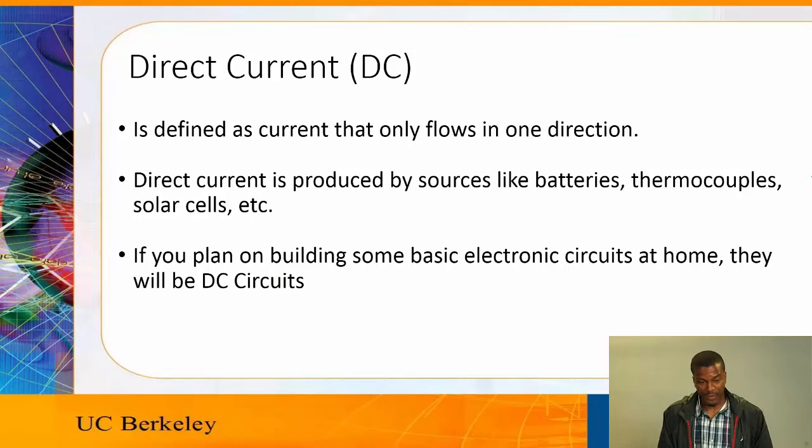There are two different types of electric current, and each of them provides their own distinct advantages and disadvantages. The first of these two types of current is called direct current. It is defined as current that only flows in one direction, or in other words, it never becomes negative. Direct current is produced by sources like batteries, thermocouples, solar cells, etc.